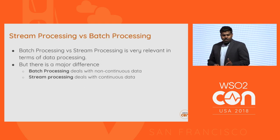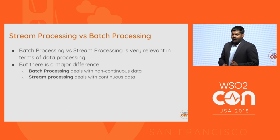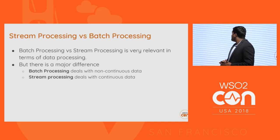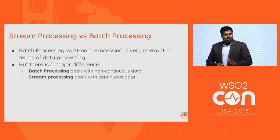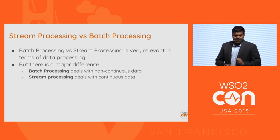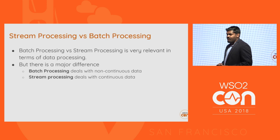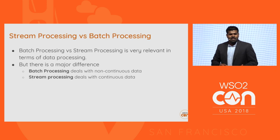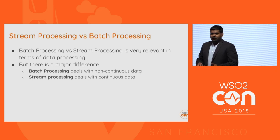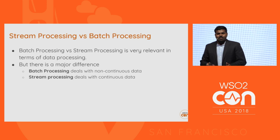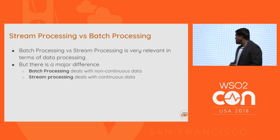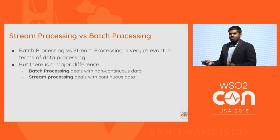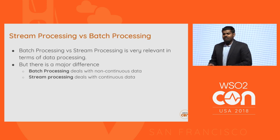The difference between stream processing and batch processing: they are very similar in terms of processing data, but there are two major differences. Batch processing deals with non-continuous data — you have the data already collected and you apply a ruleset to it. Whereas stream processing deals with continuous data — you are getting data continuously and applying a set of rules on top of that to make decisions.